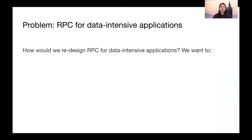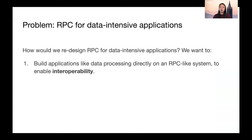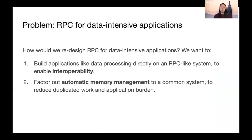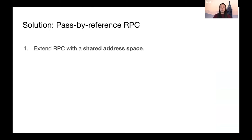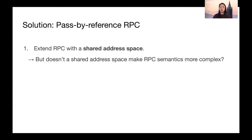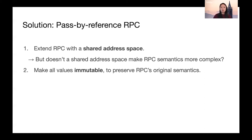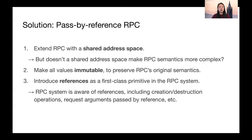So how can we better support these use cases? We have two goals. The first is to allow data-intensive applications to still use RPC directly to enable interoperability. The second is to factor out automatic memory management into a common system, reducing duplicated work and burden on developers. Our proposed solution has three parts: first, extend RPC with distributed memory or a shared address space. To avoid contradicting RPC's key property of no shared state, the second part is to make all values immutable — that way we keep the original semantics of RPC but now implemented with distributed memory. Finally, we extend RPC with first-class references, meaning references are part of the system's API.